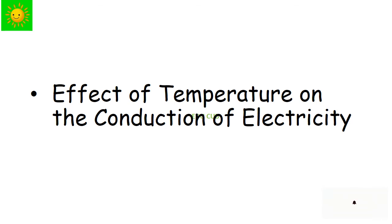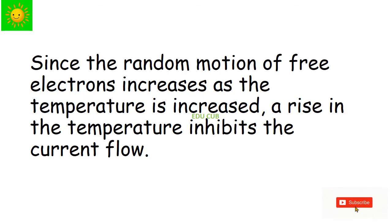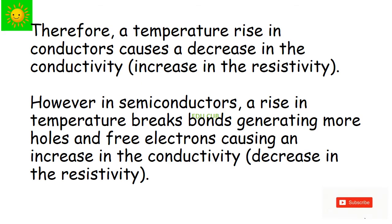Let's see the effect of temperature on the conduction of electricity. Since the random motion of free electrons increases as the temperature is increased, a rise in the temperature inhibits the current flow. Therefore, a temperature rise in conductors causes a decrease in the conductivity. That means an increase in the resistivity. However, in semiconductors, a rise in the temperature breaks bonds generating more holes and free electrons causing an increase in the conductivity. That means a decrease in the resistivity.